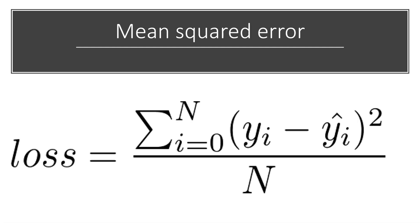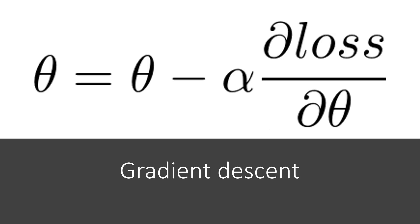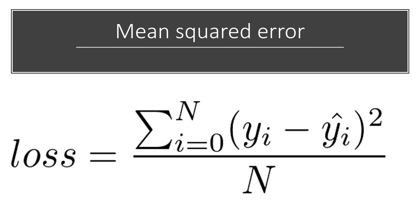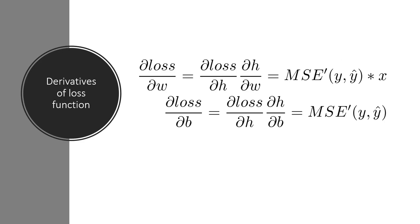The mean squared error is the sum of the errors divided by the total sample size. Since we are going to use the gradient descent algorithm, we need to find the derivatives of this loss function with respect to the parameters. There are two types of parameters: the weight w and the bias b. We need to find the derivative of the loss function with respect to w and with respect to b, and I am going to implement these formulas in Python using TensorFlow 2.0.